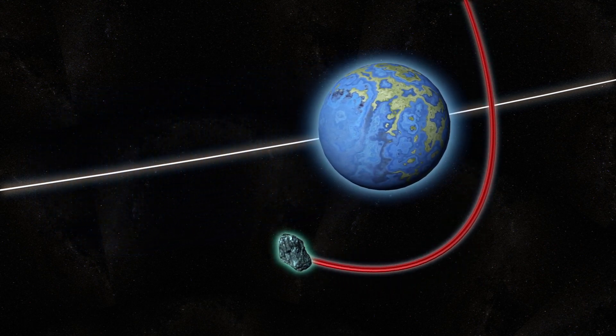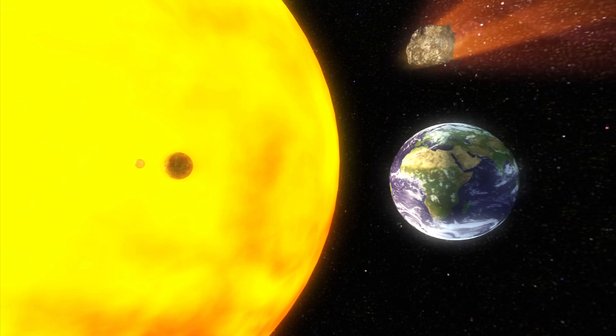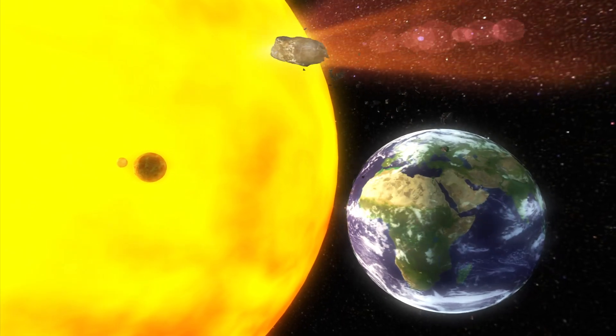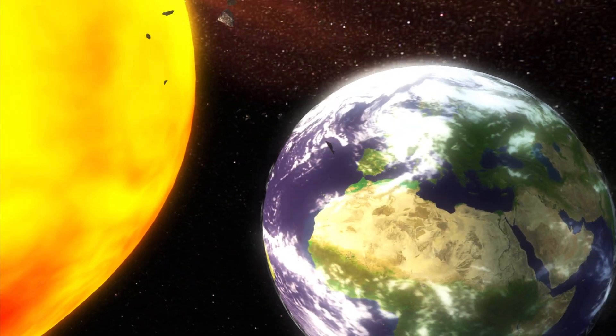If these comets get closer to the Earth, and therefore to the Sun, they begin to disintegrate. At that point, their debris will, according to the astronomers, inevitably hit our planet.